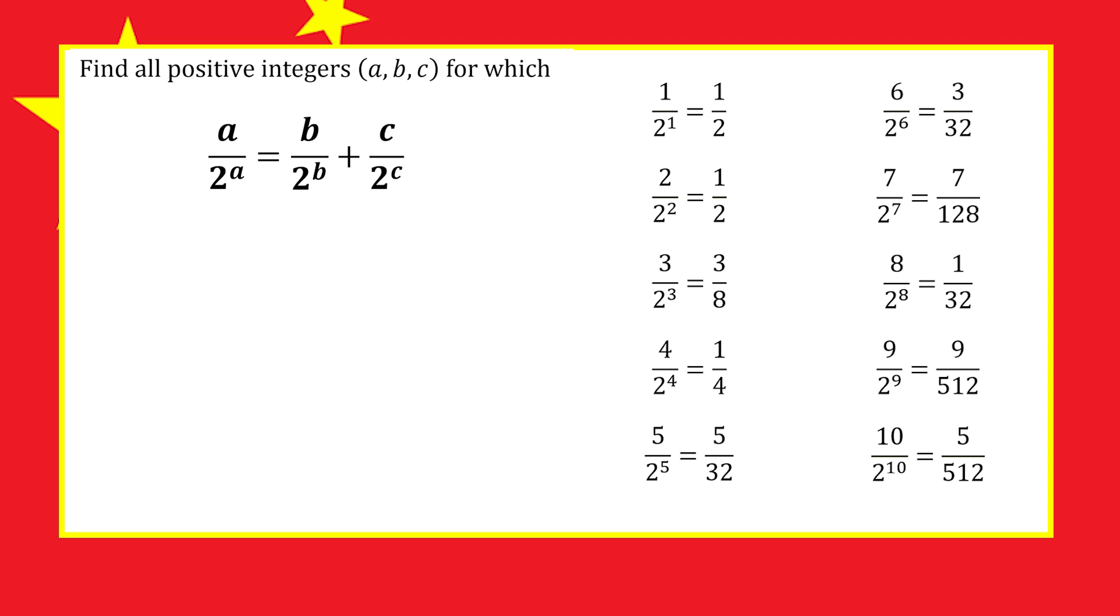Once you've listed the first 10, you might see some solutions. You're looking for two numbers in this list that sum to give a third number. If you can't find any, it might help to realize that b and c do not need to be distinct - they can be the same.